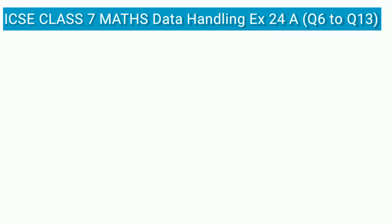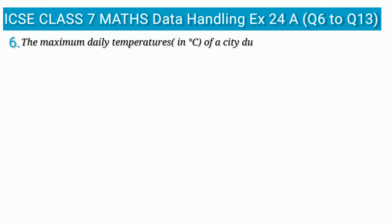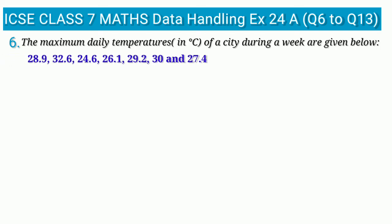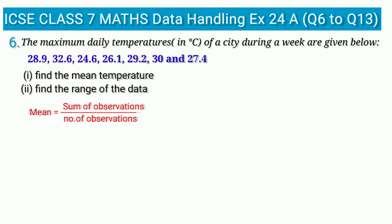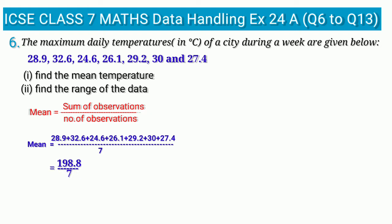In question 6, the maximum daily temperatures of a city during a week are given. The first sub-question is to find the mean temperature. The formula for mean is sum of observations divided by number of observations. On adding temperatures of 7 days we get 198.8, so mean is 198.8 divided by 7, which equals 28.4 degrees Celsius.